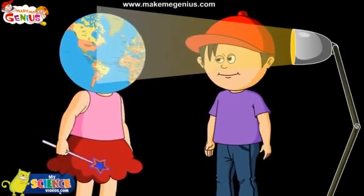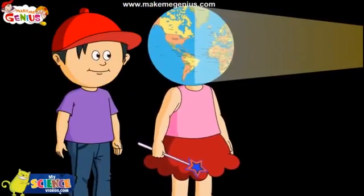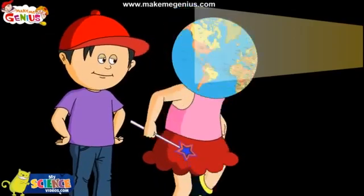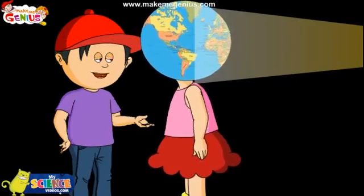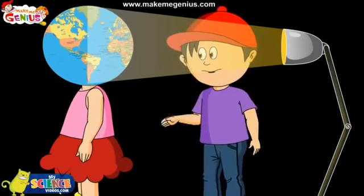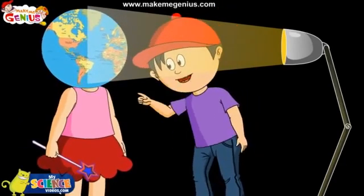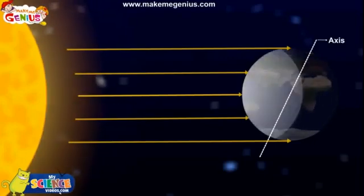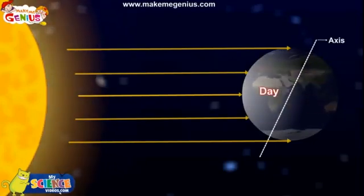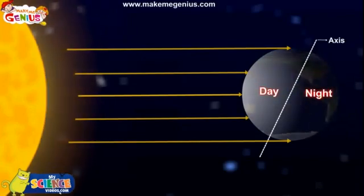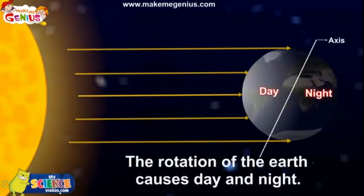Now go behind me and see. Oh yes! This part is dark, so this is night. Now this is night on your front half, and day on this back part. When the Earth rotates from west to east, only half of it faces the Sun. This half which faces the Sun has day, and the other half that does not get sunlight has night. When the Earth rotates, day changes to night and night changes to day. So the rotation of the Earth causes day and night.